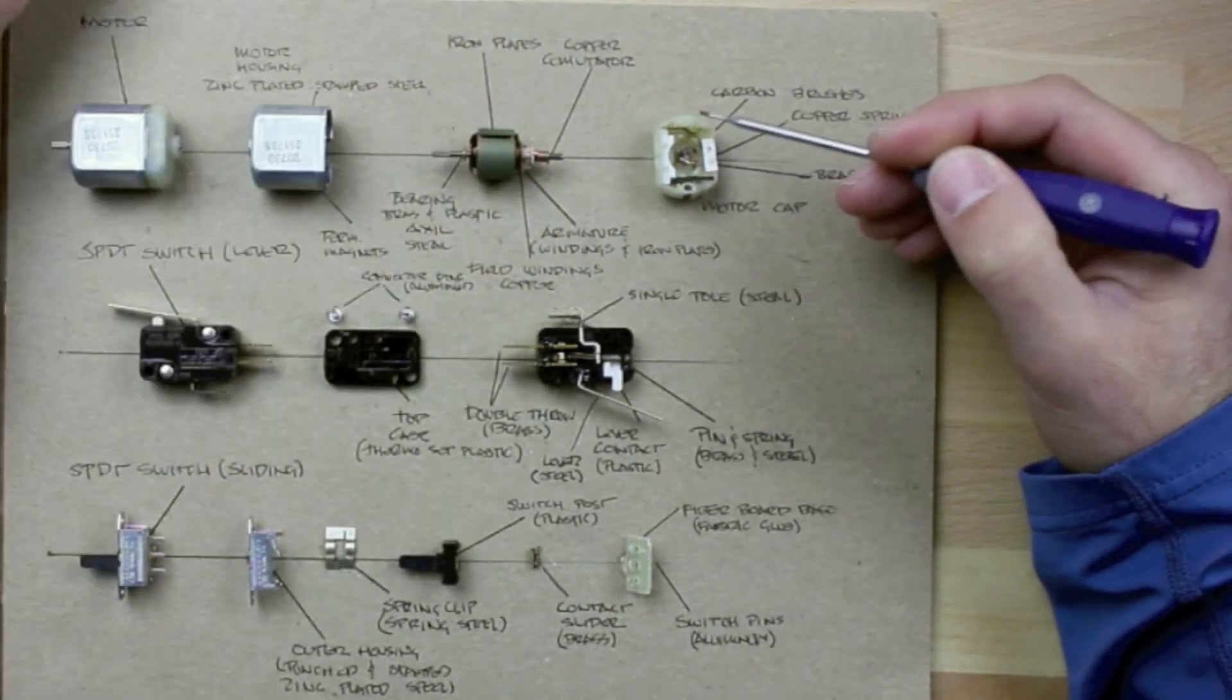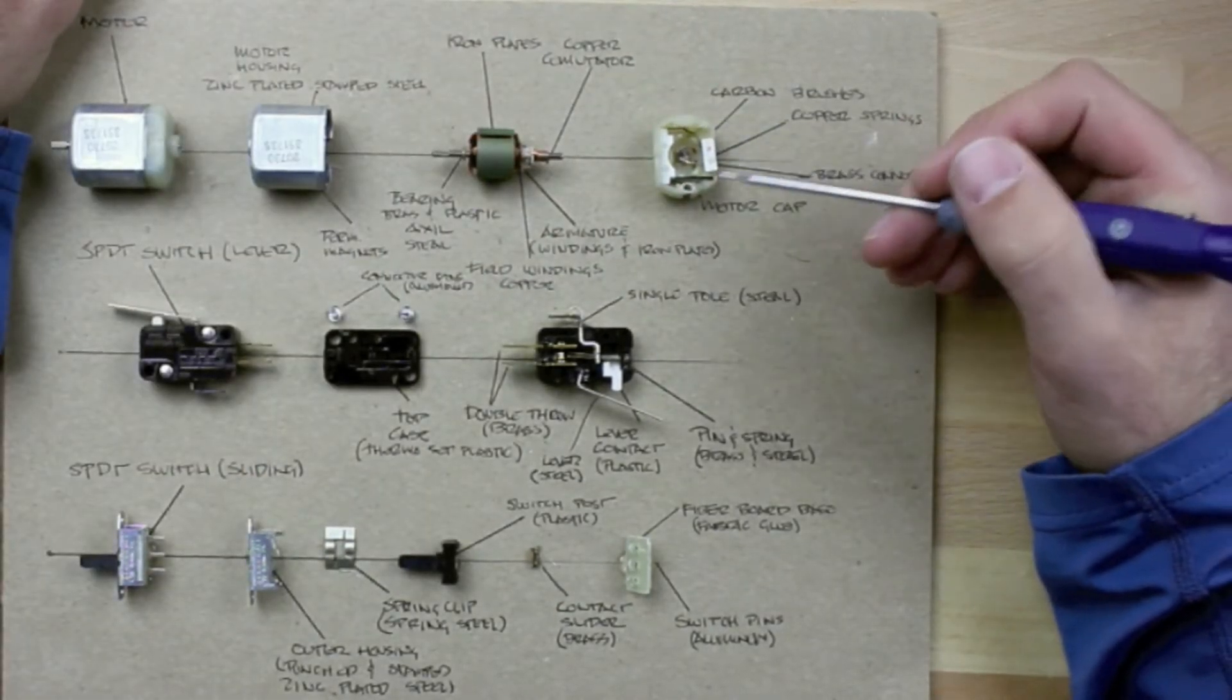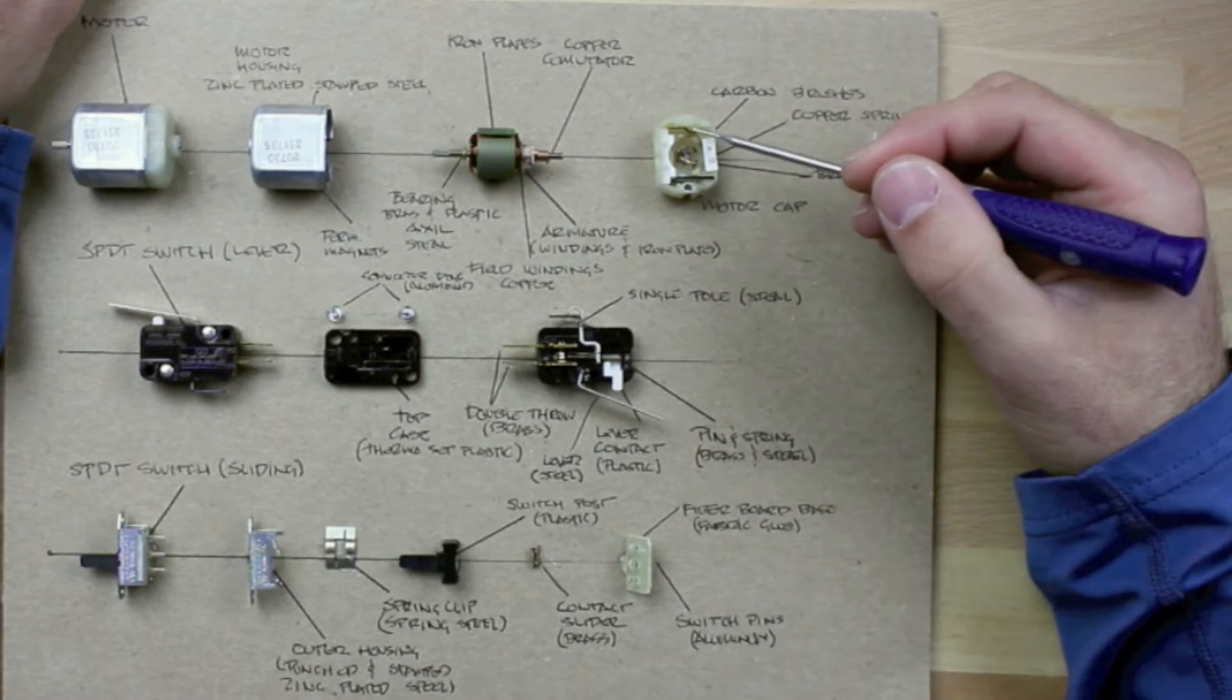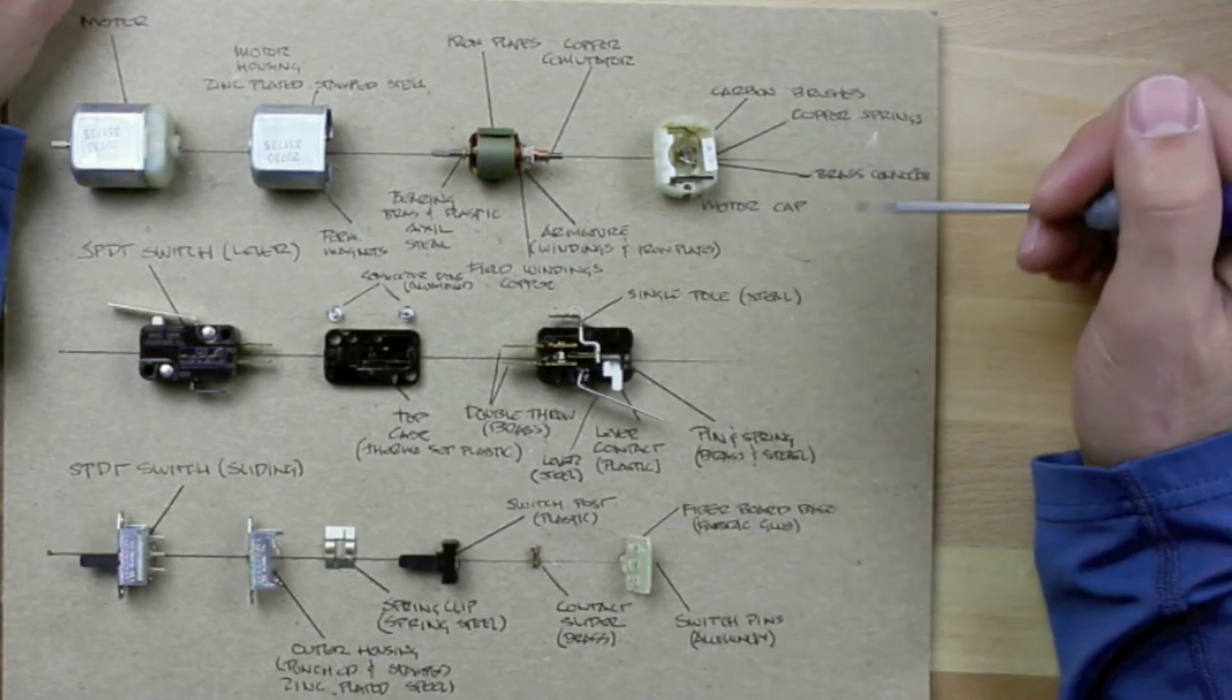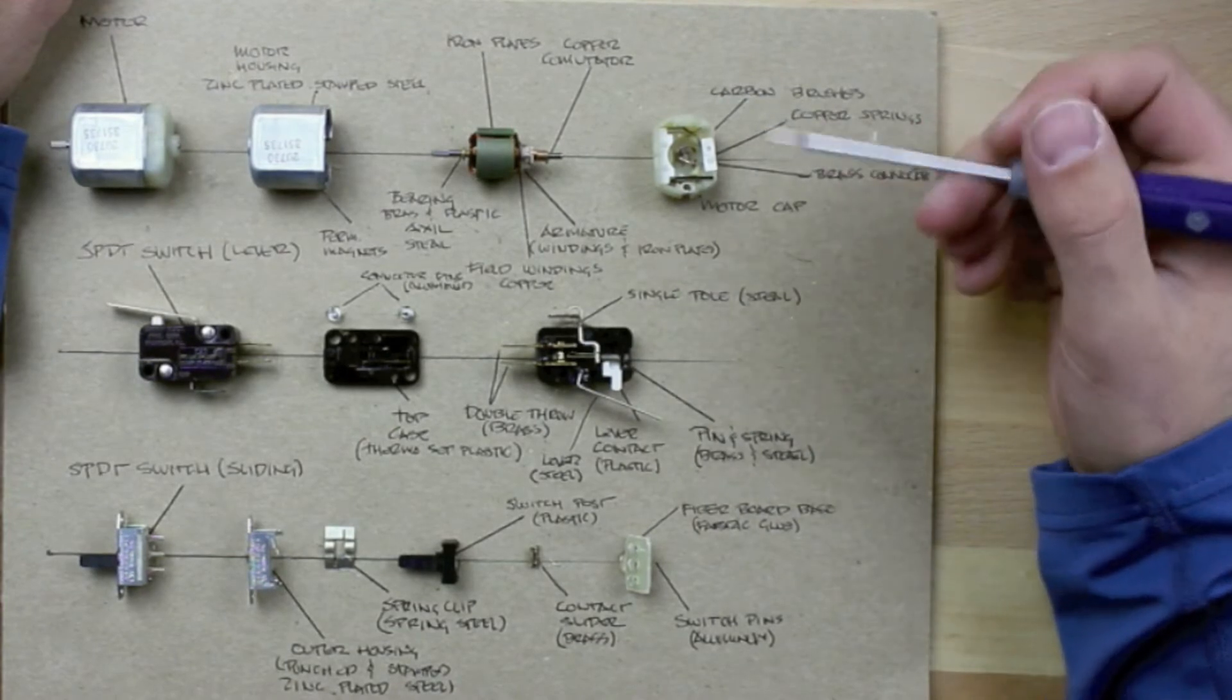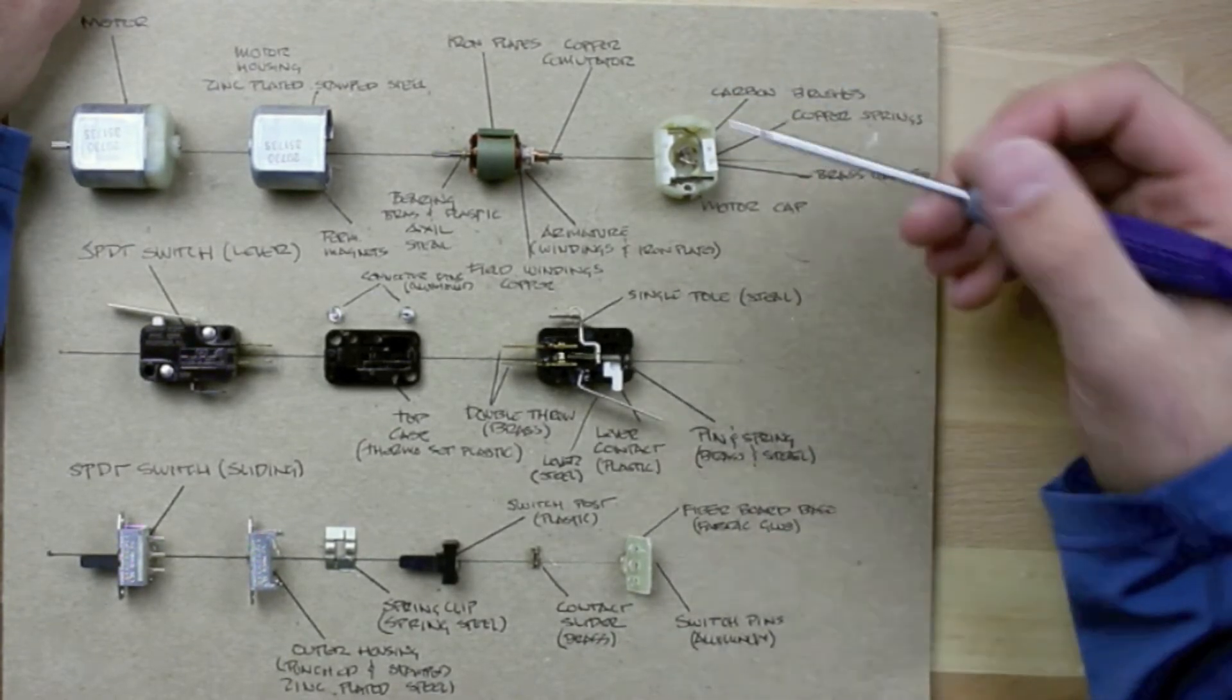The first thing we're going to take a look at is our motor back. This is a plastic back. It's plastic because it isolates the two electrical contacts. That's the contact that allows the electricity to come in and then the contact that allows it to go back out and complete our circuit.